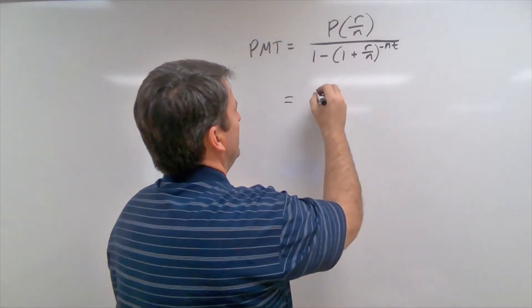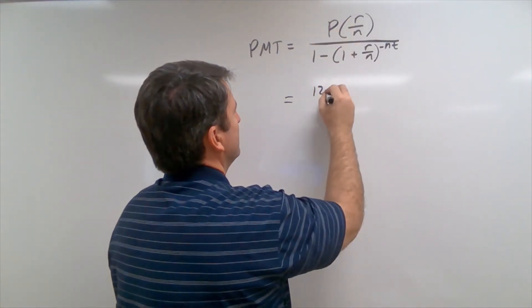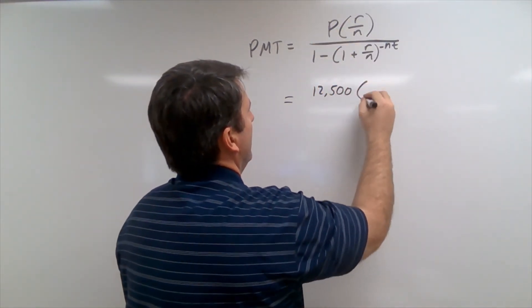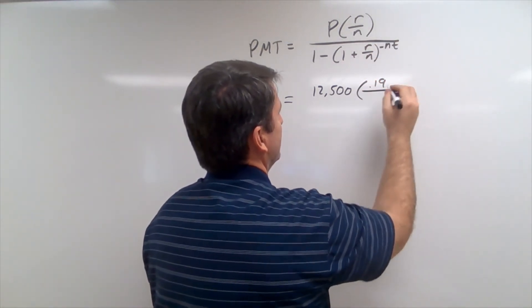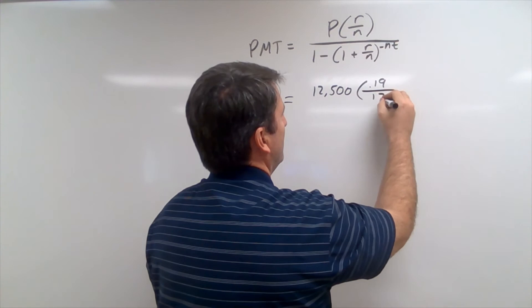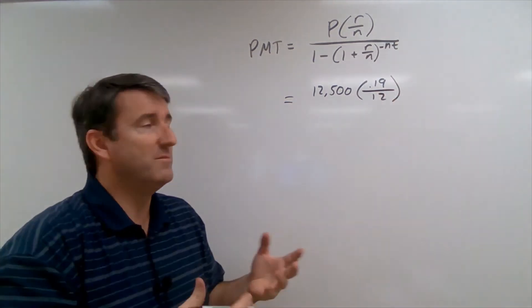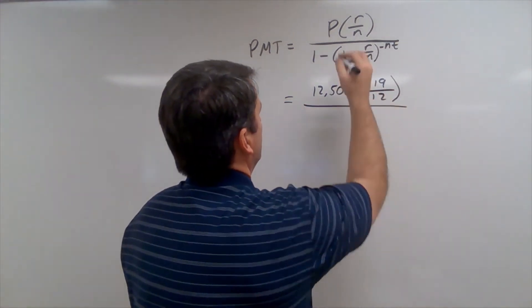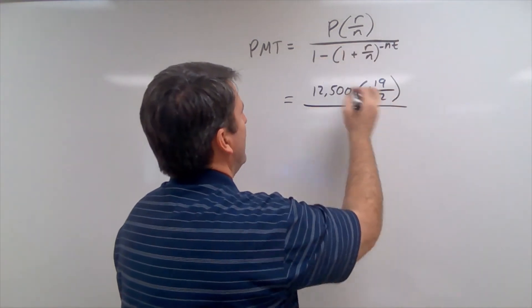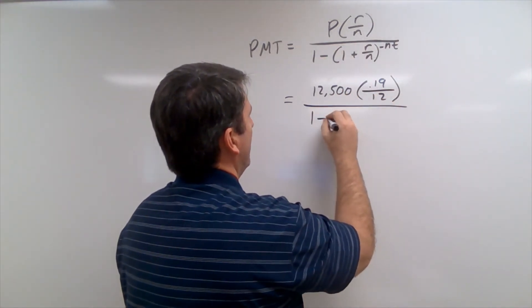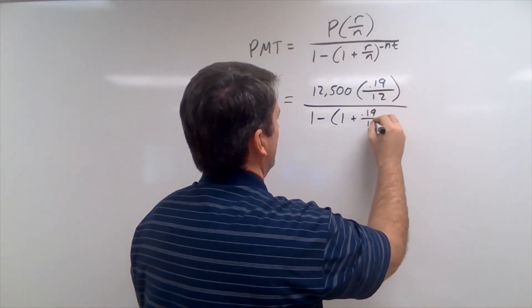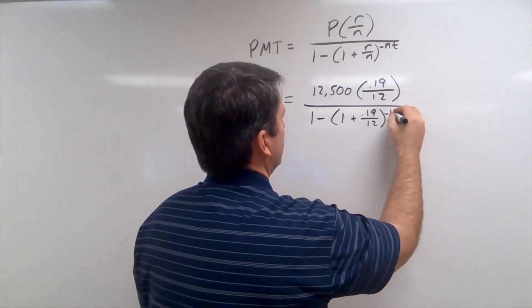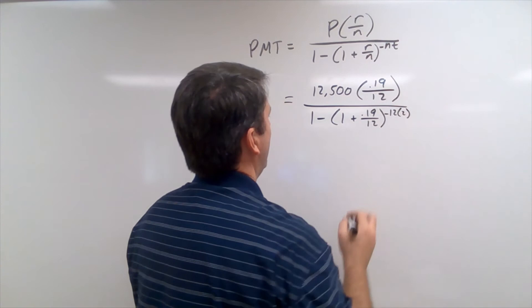So our formula is that the payment is equal to the starting principal times the annual interest rate divided by n, which is going to be 12 in this case, because we're trying to make monthly payments, divided by 1 minus 1 plus r over n to the negative nt power. t here is going to be 2, because we're trying to pay this off in two years. So this is going to be, our principal is $12,500. The interest rate is 0.19, 19%. We're going to divide that by 12, because we're going to make monthly payments. And then all of that is going to go over 1 minus 1 plus 0.19 divided by 12 to the negative 12 times 2 power.